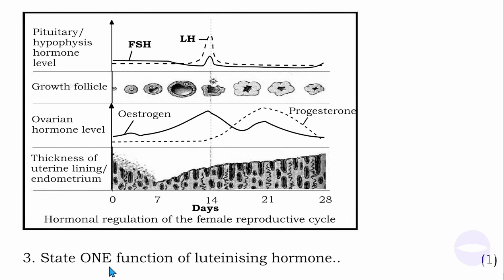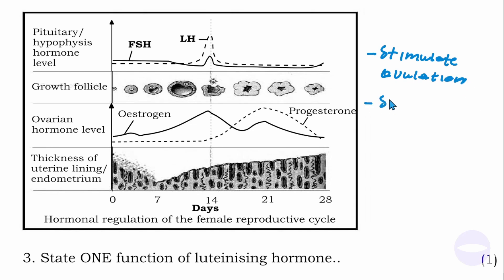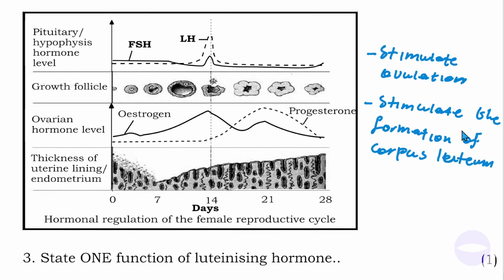Question number three: state one function of the luteinizing hormone. As the level of the luteinizing hormone increases, ovulation takes place, so LH stimulates ovulation. Another function of the luteinizing hormone is that it stimulates the formation of the corpus luteum. Either answer — it stimulates ovulation, or it stimulates the formation of the corpus luteum — is acceptable.